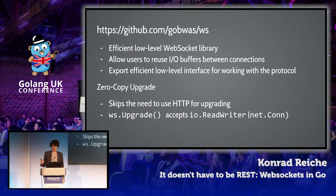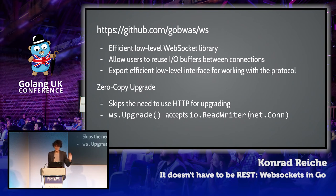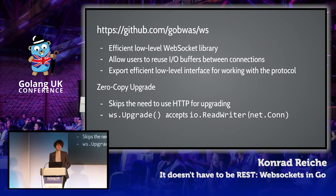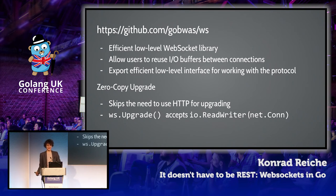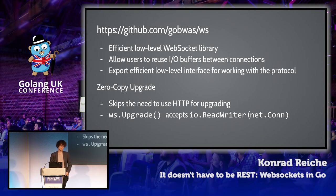For those interested in getting more out of WebSocket libraries in terms of efficiency, one particular library I want to point out is the WS library, because it exposes low-level primitives for using WebSockets. With that library, for instance, it's possible to reuse IO buffers. A particularly interesting feature is what they call zero-copy upgrade: every time you upgrade the HTTP connection to the protocol you also allocate memory, and if you want to eliminate even that, they offer an upgrade that just accepts the reader and writer interface. The net.Conn type, for instance, satisfies that.